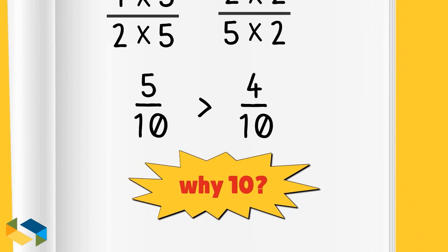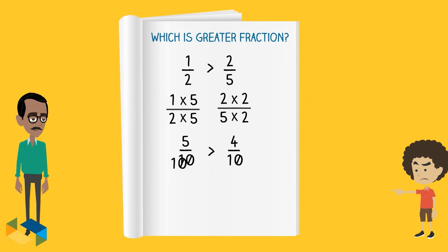Good question. If you observed carefully, the number 10 here, as a matter of fact, is the lowest common multiple or LCM of the numbers 2 and 5.